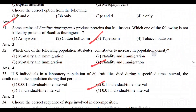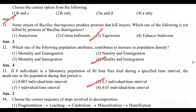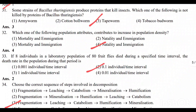Question number 31: Some strains of Bacillus thuringiensis produce proteins that kill certain insects. Which one of the following is not killed by the proteins of Bacillus thuringiensis? Option 3 is the correct answer.